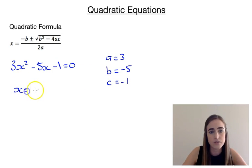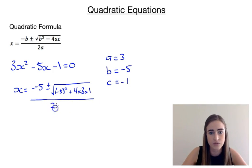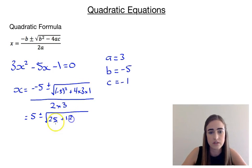So we'll substitute all of those in. We'll have x equals minus b, so minus minus 5, plus or minus the square root of b squared — so minus 5 squared — plus 4ac, so 4 times 3 times 1, all over 2a, so 2 times 3. Simplifying: minus minus 5 is just positive 5, plus or minus the square root of minus 5 squared, which is 25, plus 4 times 3 times 1, which is 12, over 2 times 3, which is 6.